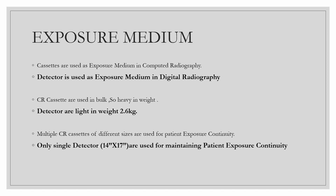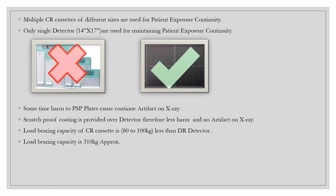In CR, multiple cassettes of different sizes are used for patient exposure continuity. While doing portable and routine X-rays, we have to use multiple CR cassettes. But in DR, only a single detector — the 14x17 — is used for maintaining patient exposure and continuity, making it much simpler.